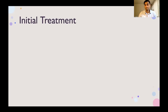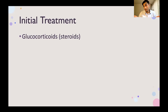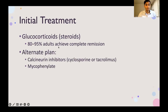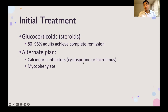The mainstay of treatment is glucocorticoids — steroids. These dampen down the immune response that contributes to the changes seen in minimal change disease. Outcomes are pretty good: about 80 to 95% of adults achieve complete remission with steroids. For some scenarios where steroids can't be used — either due to side effects, uncontrolled diabetes, or active infection — alternate options include calcineurin inhibitors like cyclosporin or tacrolimus, and sometimes mycophenolate.